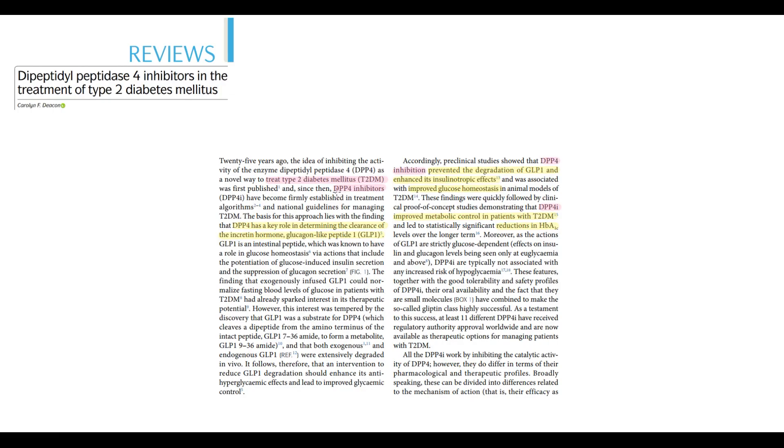Dipeptidyl peptidase inhibitors are used in diabetes type 2. DPP-4 is the key enzyme that determines the clearance of glucagon-like peptide 1. DPP-4 inhibitors prevent degradation of GLP-1, and by this they enhance the insulinotropic effects.